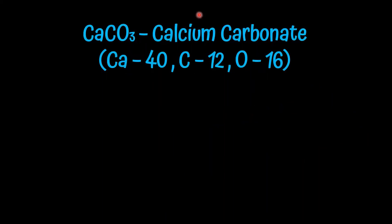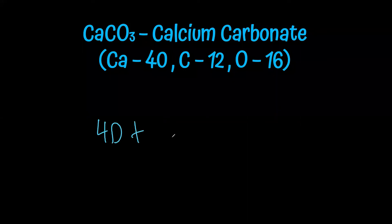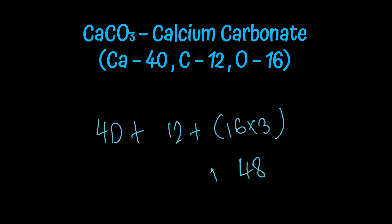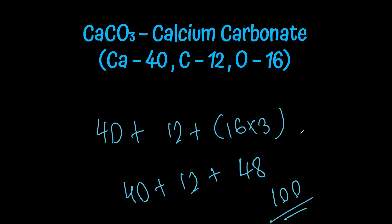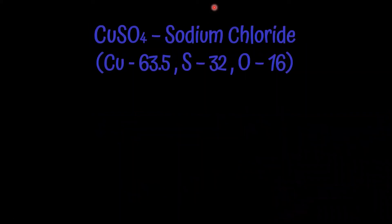CaCO3, calcium carbonate — calcium (40) + carbon (12) + three oxygen atoms (16×3 = 48) = 40 + 12 + 48 = 100. The molar mass of calcium carbonate is 100 g mol⁻¹.